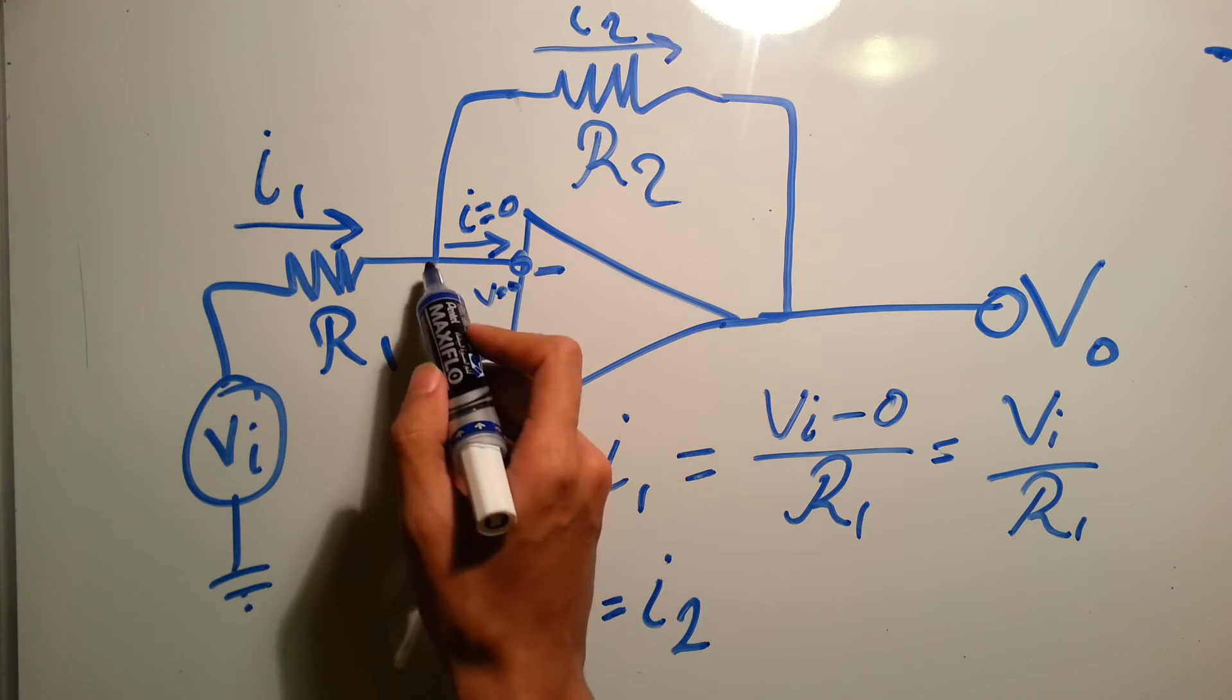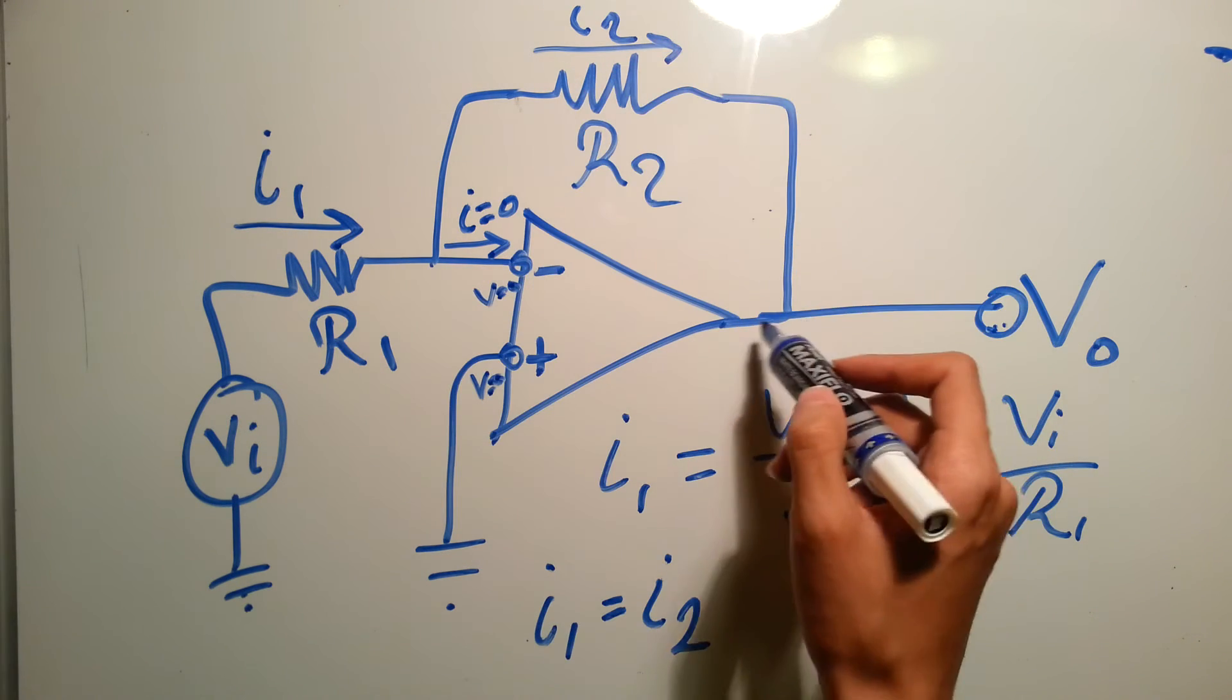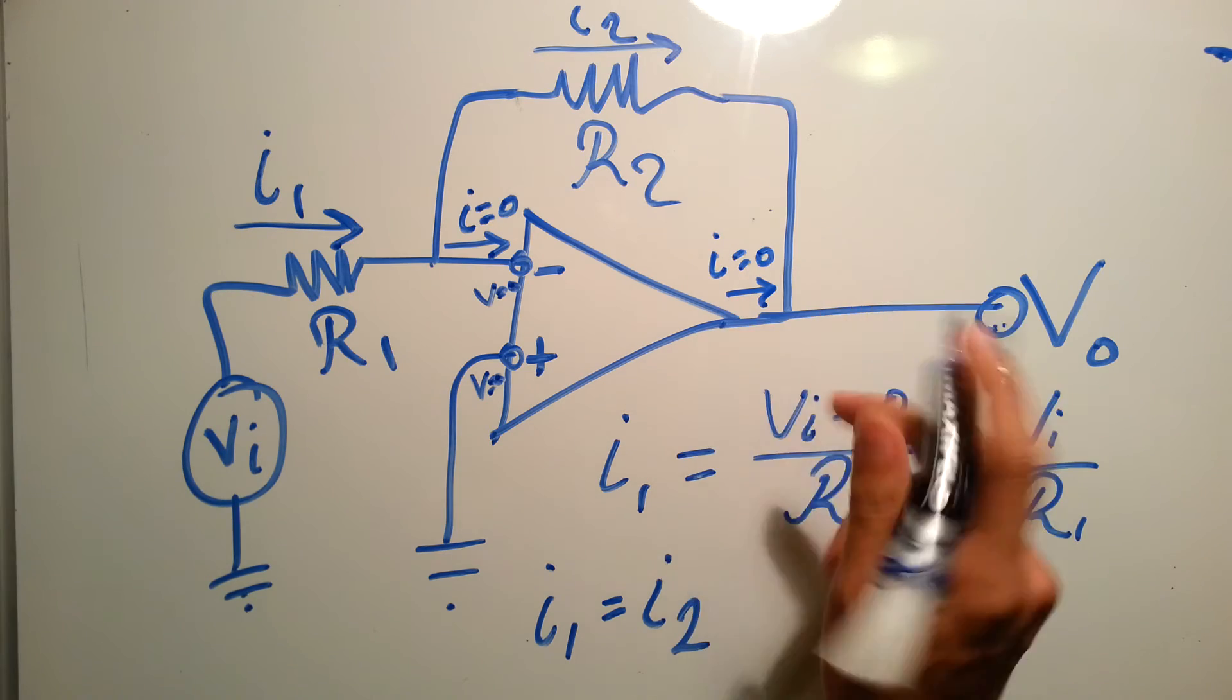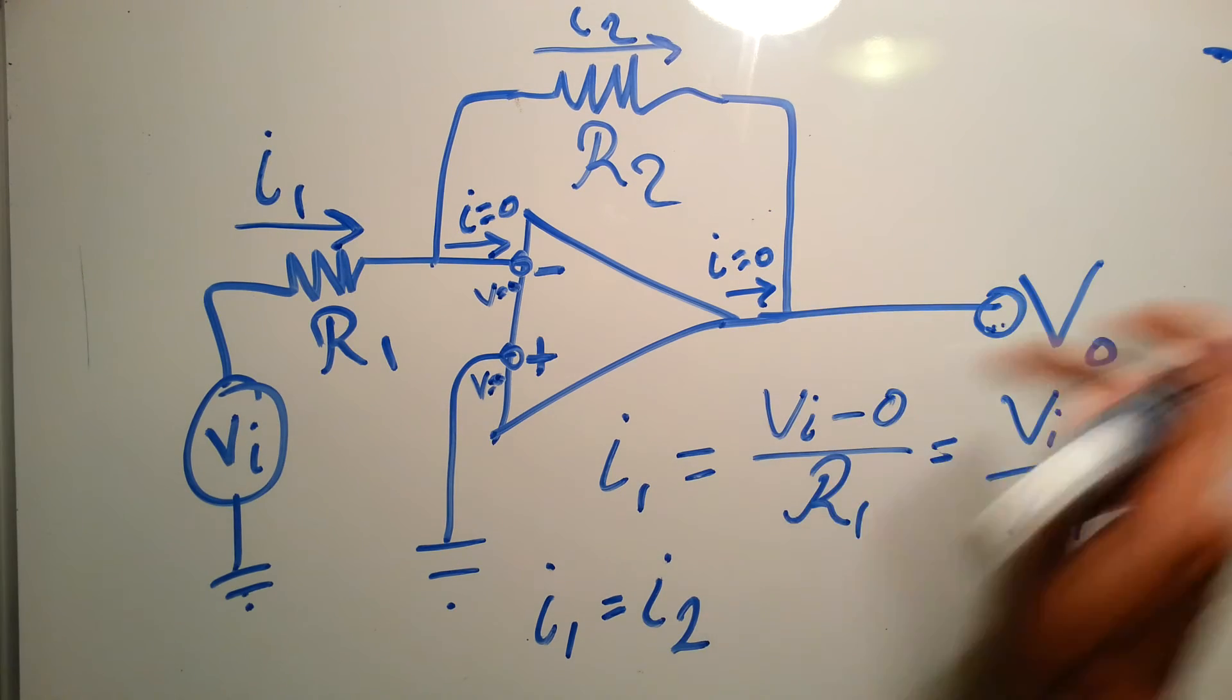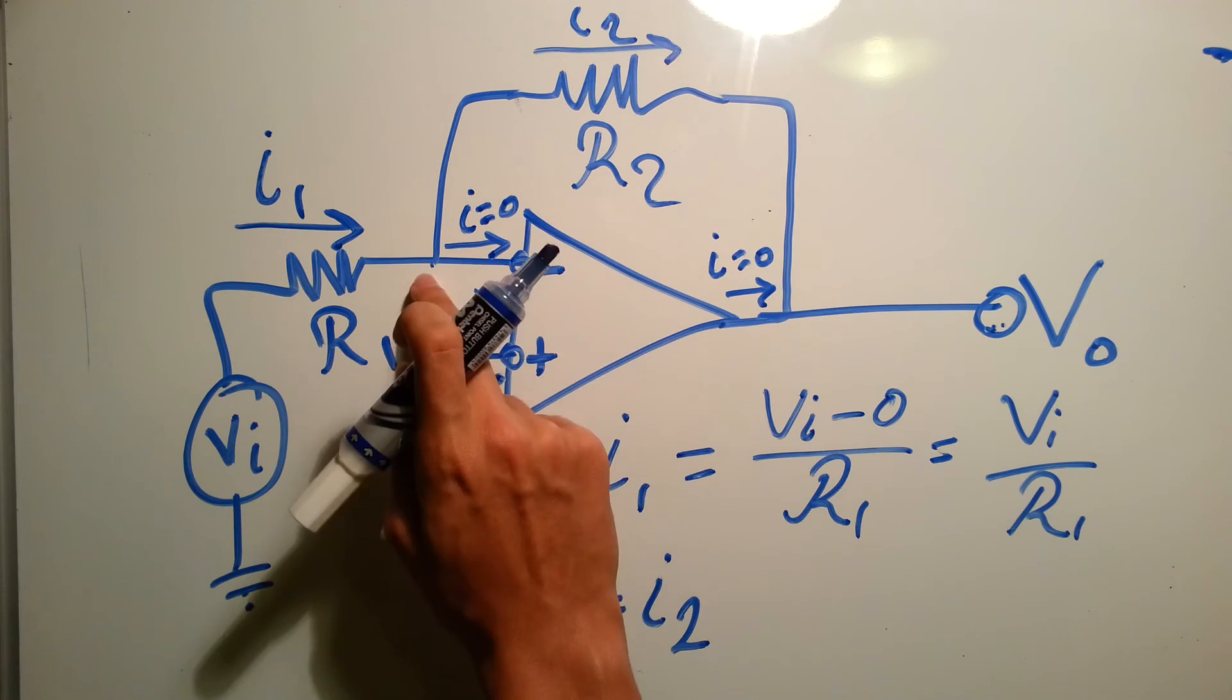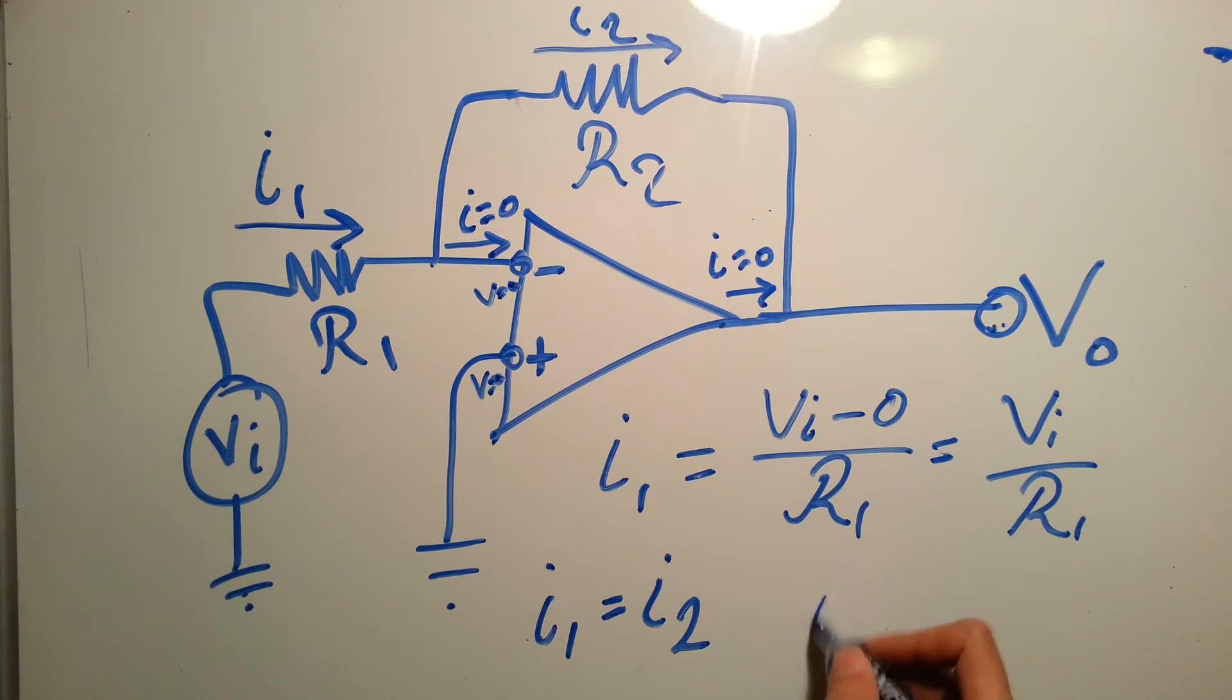So I1 equals I2, but what does I2 equal? It equals this voltage minus the voltage on this branch over R2. Since also here this I1 equals I2 equals 0 over R2, so I2 equals 0 minus V out over R2.